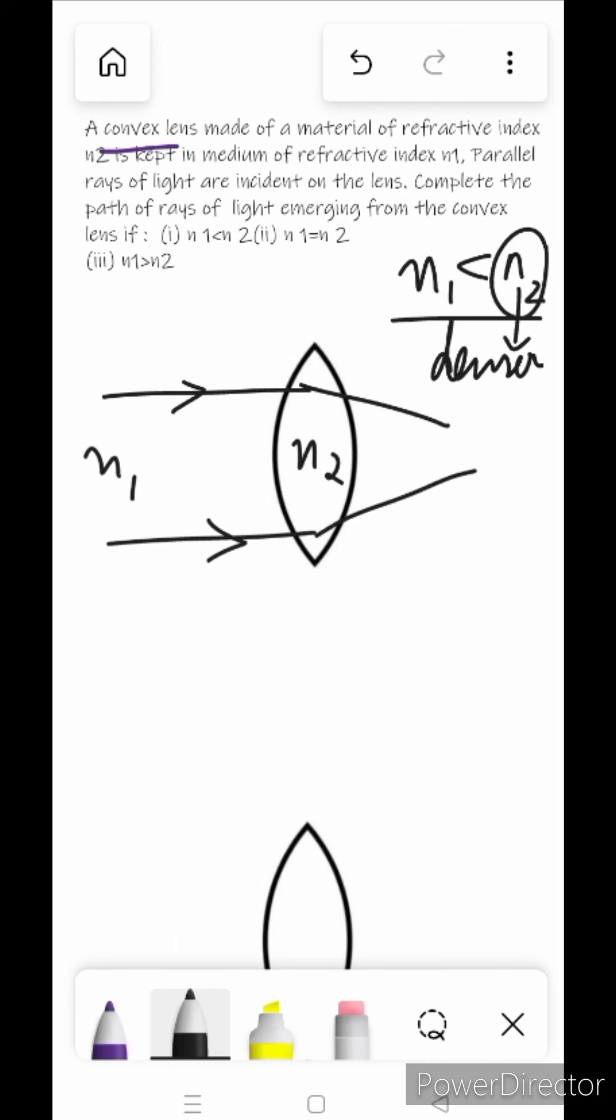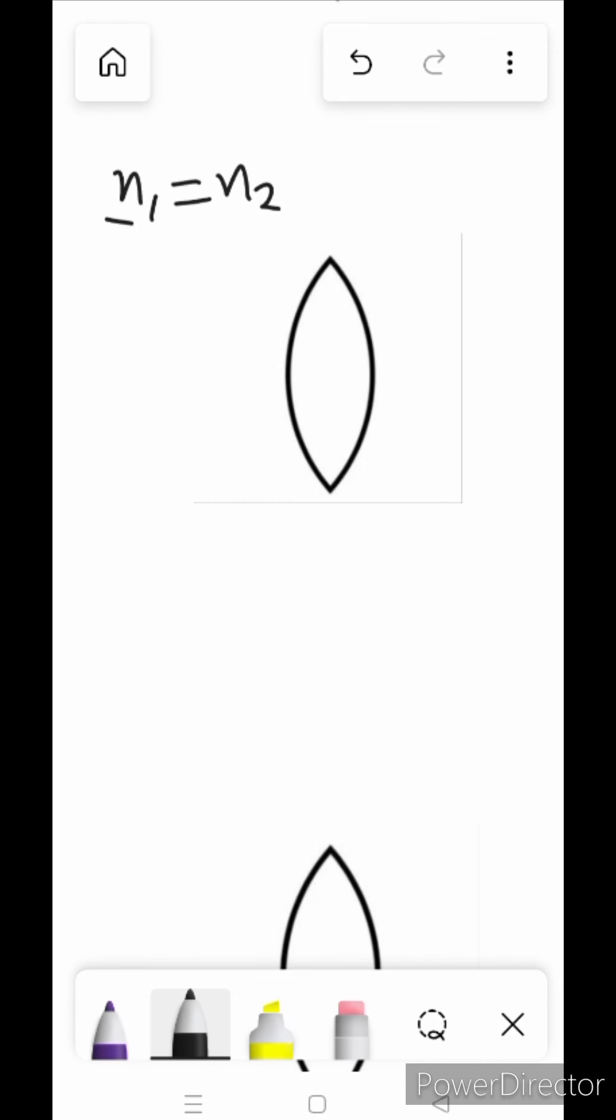Now if we talk about the second part, n1 is equal to n2, means there is no change in medium. So when there is no change in medium and parallel rays of light are incident, there is no bending. The rays go straight.